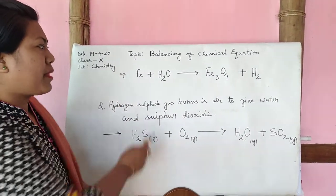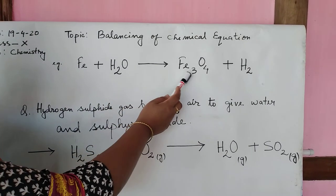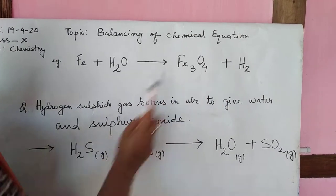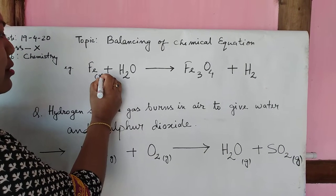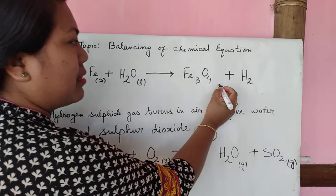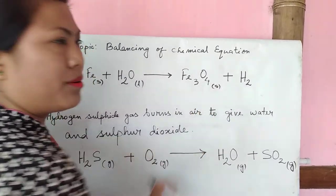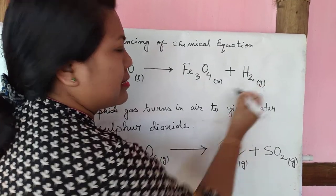In this example, iron reacts with water to give iron oxide and hydrogen gas. So here you have to write iron solid, water liquid state, iron oxide as solid, and hydrogen as gas.